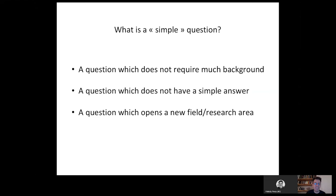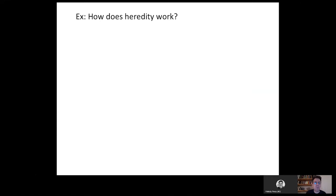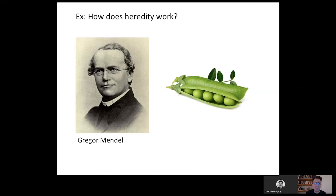Let's go through one or two examples. Here is one simple question: how does heredity work? This has been tackled by Gregor Mendel with his study on peas and the formalization through mathematics of genetics and heredity. The new field that emerged from this is genetics. This is a typical case of a simple question — how does heredity work — and a new field emerging from it.